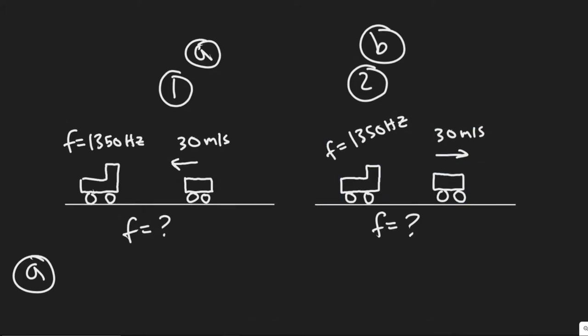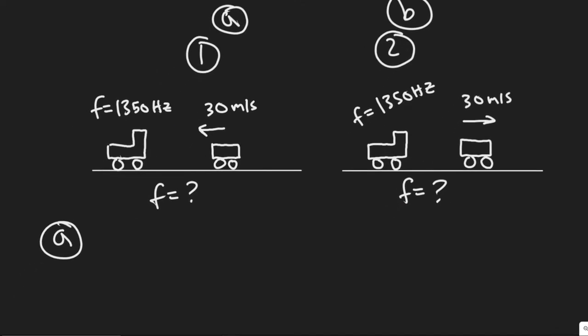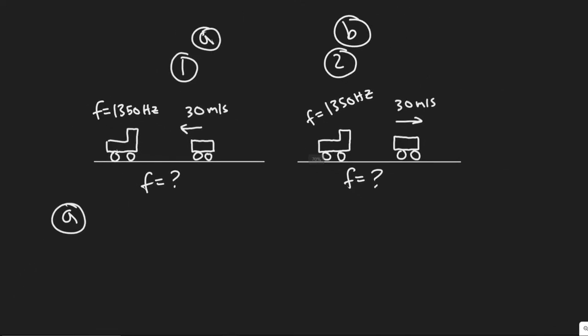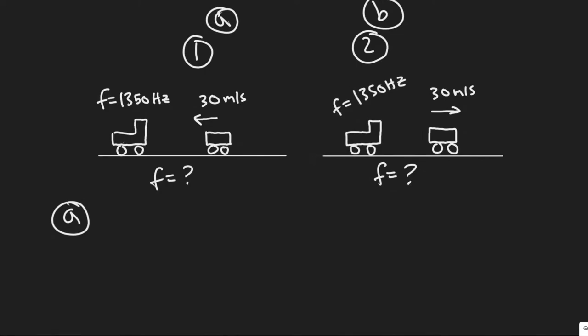And what we're trying to find is the frequency that we, the car, imagine us as the car, is going to observe if we're going towards it or away from it. So in order to solve this, we're going to use the Doppler effect formulas. And so the formula for these are going to be different depending on whether we're approaching the object or going away from the object.